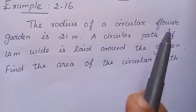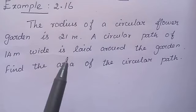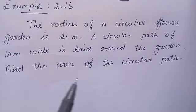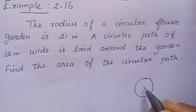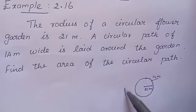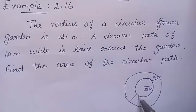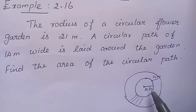The radius of a circular floor garden is 21 meters. A circular path of 14 meters wide is laid around the garden. Find the area of the circular path. The radius of the garden — that is the inner circle — is 21 meters. For the radius of the outer circle, we add 21 plus 14 to get 35 meters.